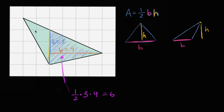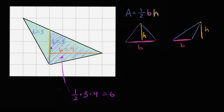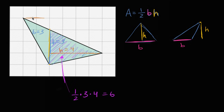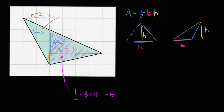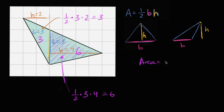Now we can do a similar thing with the other triangle. We can view this line as the base, which is equal to three, and the height of this triangle is two. So the area is one half times three times two — one half times two is one, times three — this is going to be equal to three. So the area of the whole green triangle is three plus six, giving an area of nine.